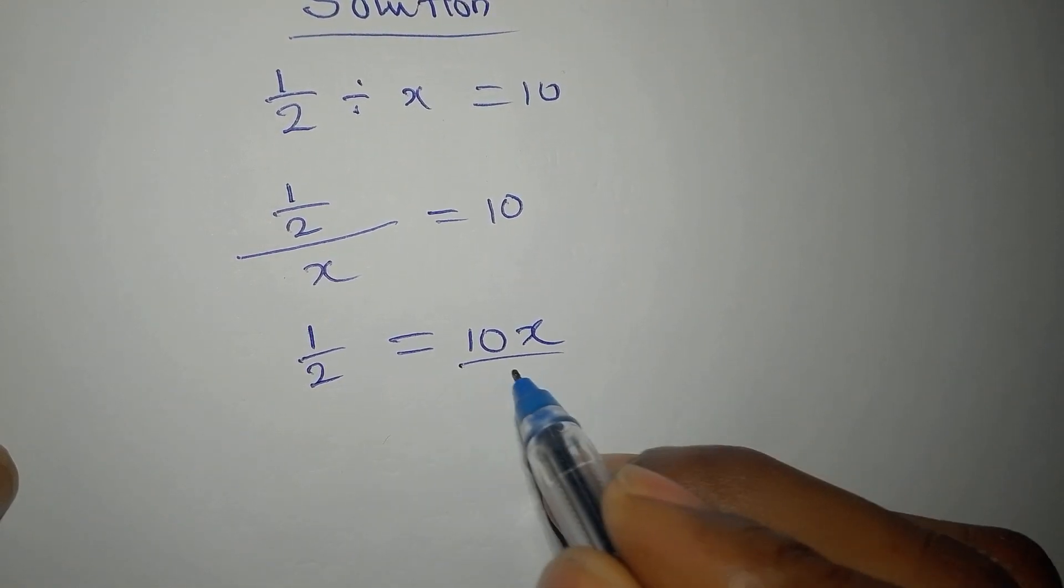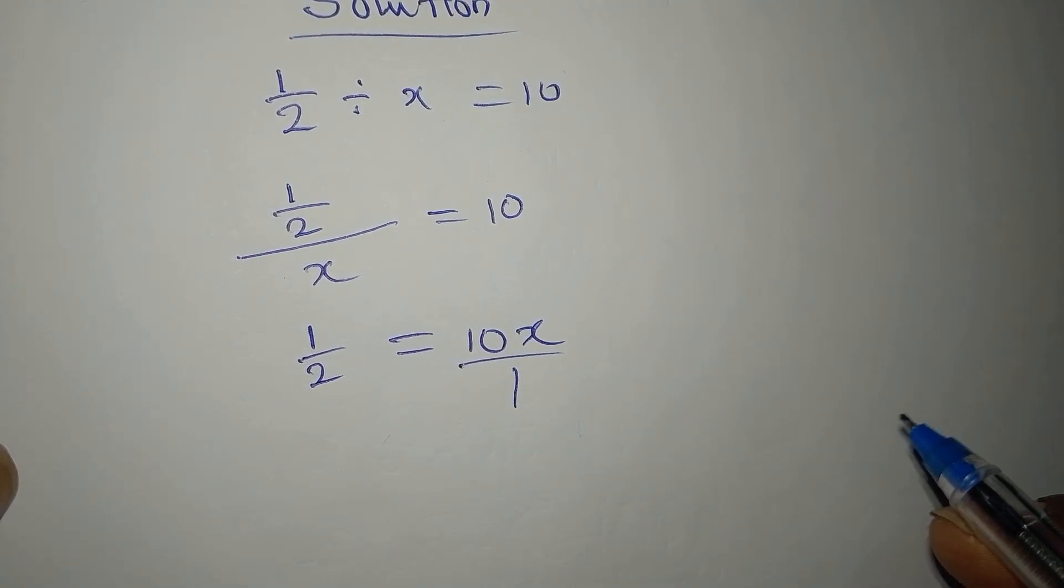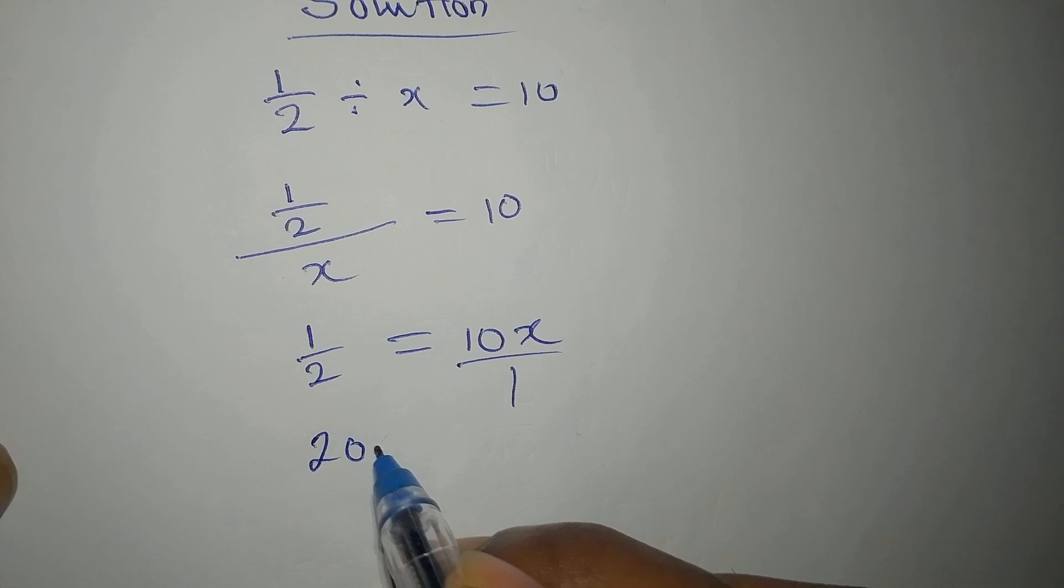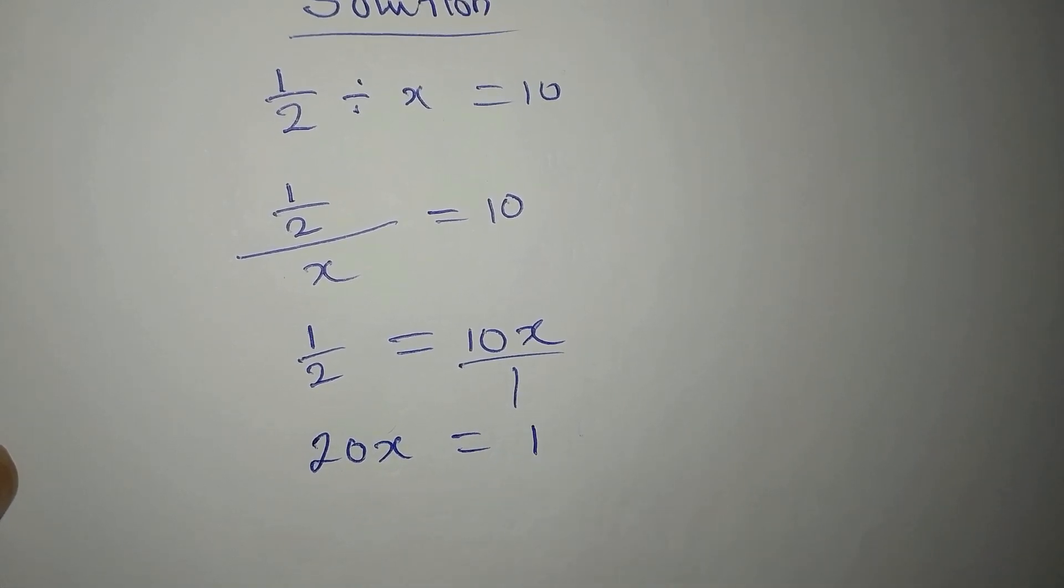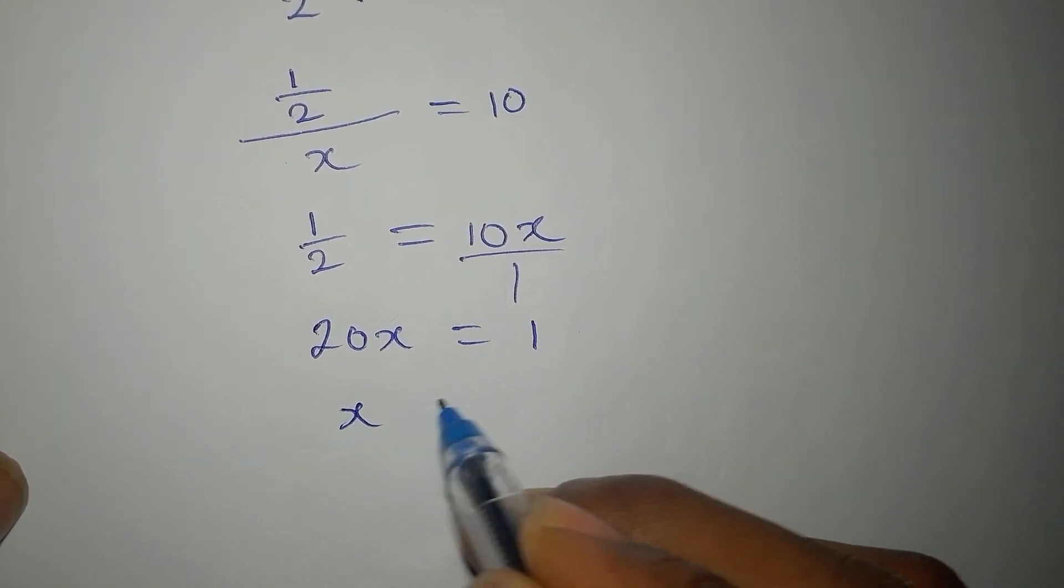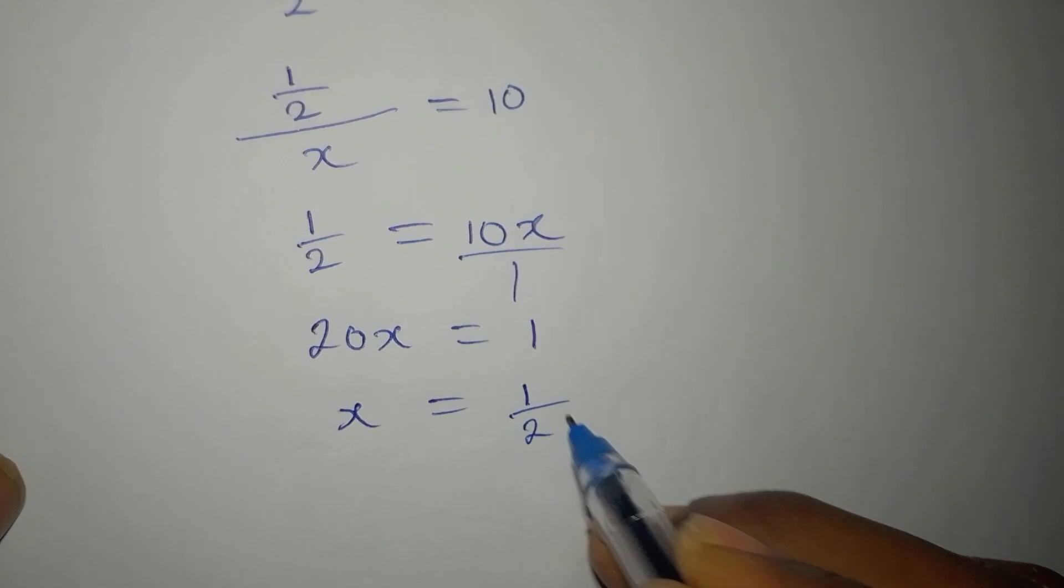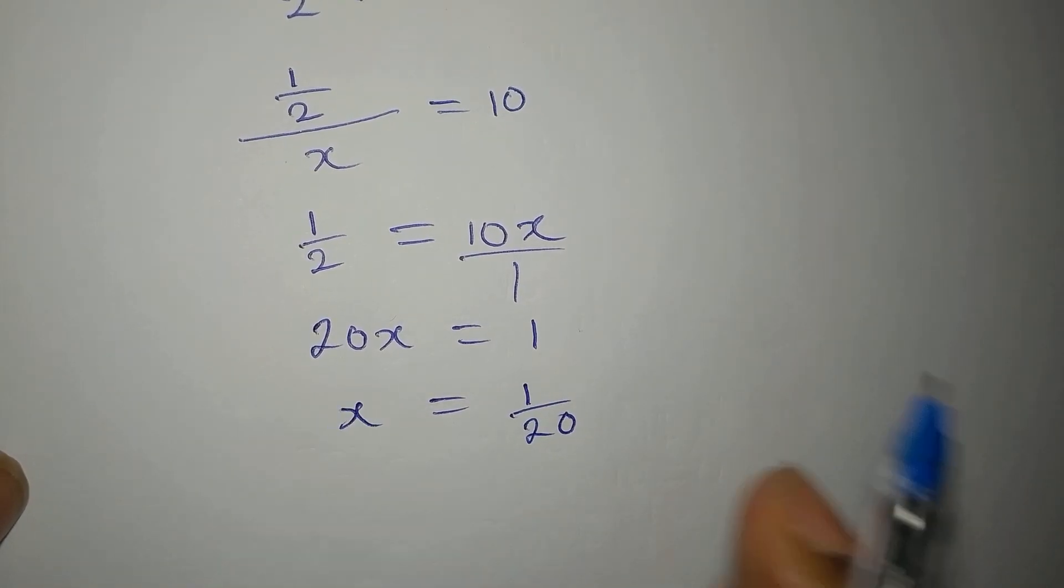Now, what do we do? This is over one. We will still cross multiply so that twenty x is equal to one, and then our x is equal to one over twenty if we divide both sides by twenty.